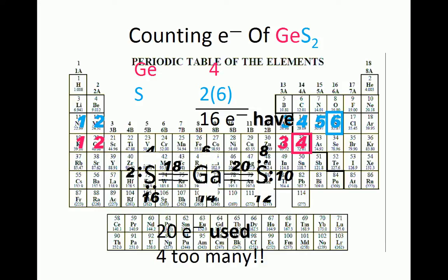Now we recount the electrons in the modified structure, and we see that the number of electrons used equals the number of electrons we have, making the germanium double bonded to each sulfur with each sulfur also possessing two lone pairs, the correct structure.